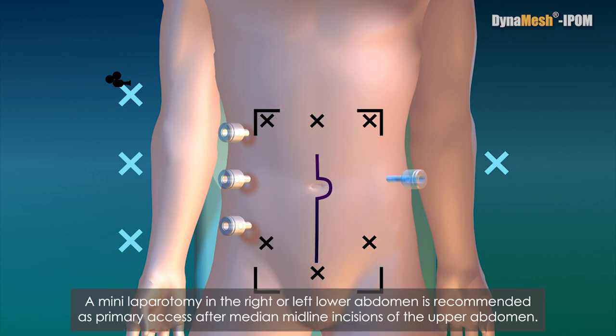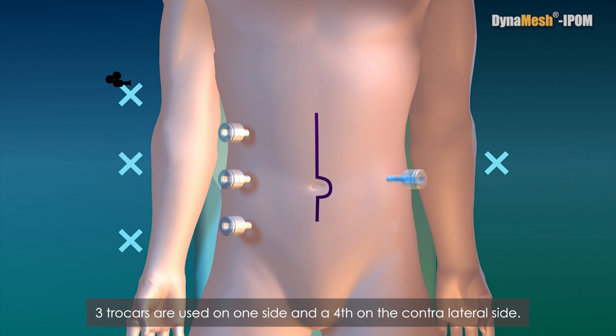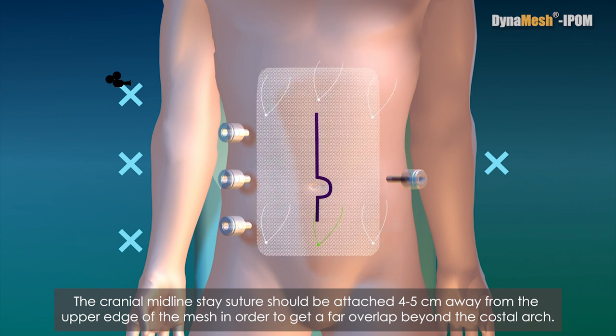A mini-laparotomy in the right or left lower abdomen is recommended as primary access after median midline incisions of the upper abdomen. Again, three trocars are used on one side and a fourth on the contralateral side. The cranial midline stay suture should be attached 4-5 cm away from the upper edge of the mesh in order to get a far overlap beyond the costal arch.